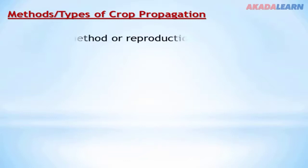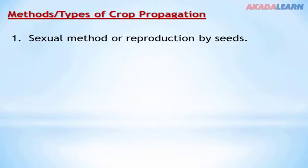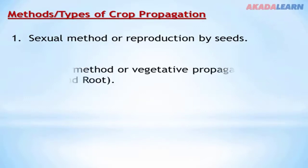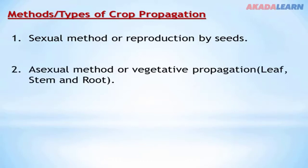Methods or types of crop propagation: we have the sexual method, which is reproducing by seeds, and then we have the asexual method, or vegetative propagation — propagation by use of any plant parts apart from the seed.